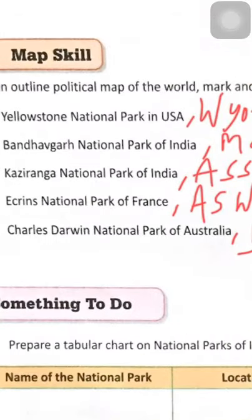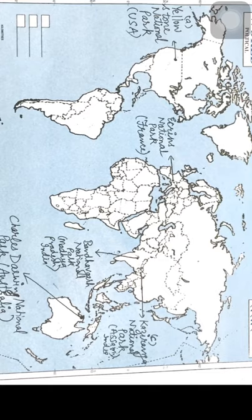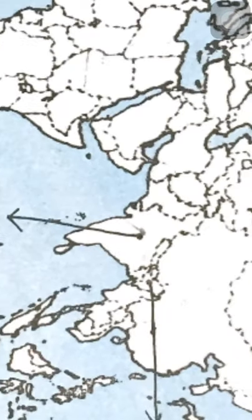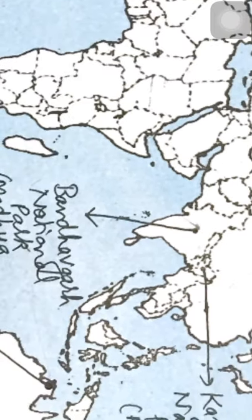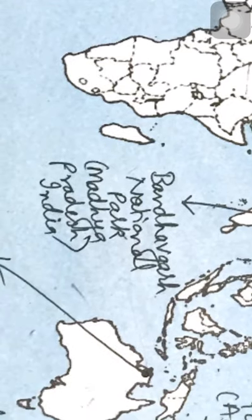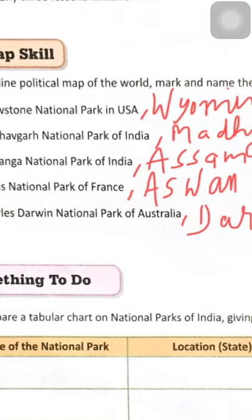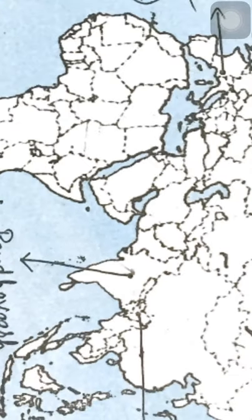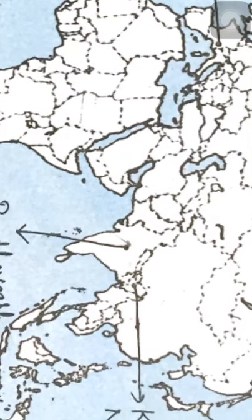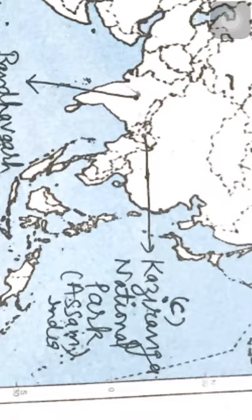Second: Bandhavgarh National Park of India, located in Madhya Pradesh — identify India in Asia and mark Madhya Pradesh in the middle. Third: Kaziranga National Park of India, located in Assam. Be careful — many students make mistakes by marking it before West Bengal; Assam comes after West Bengal on the map.